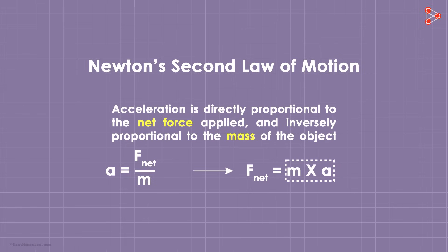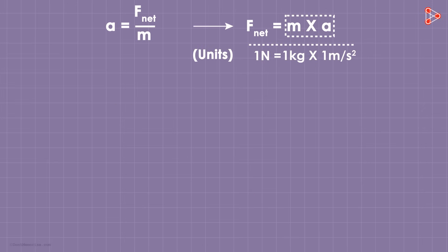With this, can you tell me the units of force? That should be easy. The standard unit of mass is kilograms, and that of acceleration is meters per second squared. So the unit of force is kilograms times meters per second squared. And this is what we call a Newton. 1 Newton is 1 kilogram times meters per second squared.